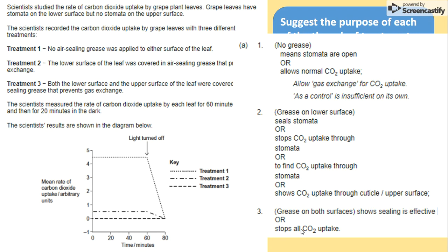Number one means that the stomata are open, so normal uptake of carbon dioxide can be taking place. Number two stops the uptake of carbon dioxide through the upper surface. And number three stops the whole uptake of carbon dioxide. So that's checking if the sealing is effective, because there should be no gas exchange at all.